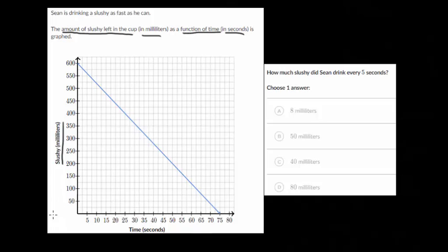As time increases, Sean drinks a slushy, so there's going to be less and less in the cup. It looks like at zero seconds the slushy has 600 milliliters.